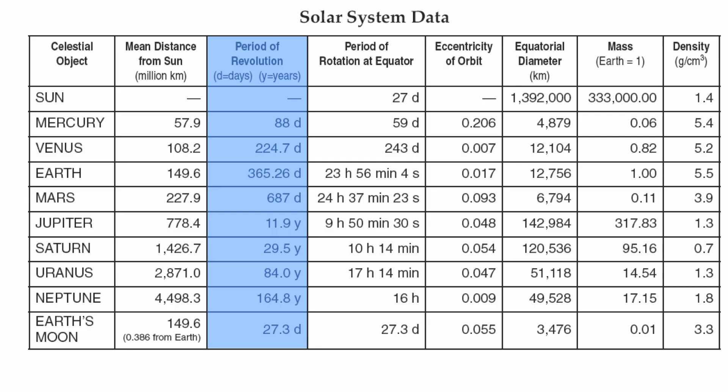Now Mercury revolves once every 88 days. Neptune revolves once every 164.8 years. So very important to understand that relationship in regards to our planets.